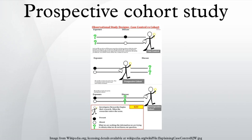For example, one might follow a cohort of middle-aged truck drivers who vary in terms of smoking habits, to test the hypothesis that the 20-year incidence rate of lung cancer will be highest among heavy smokers, followed by moderate smokers, and then non-smokers. The prospective study is important for research on the etiology of diseases and disorders.